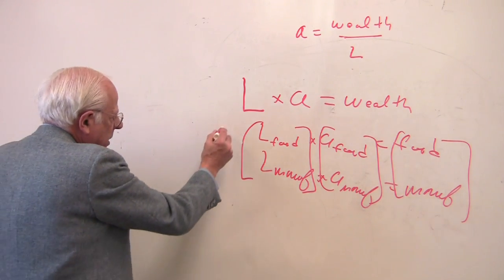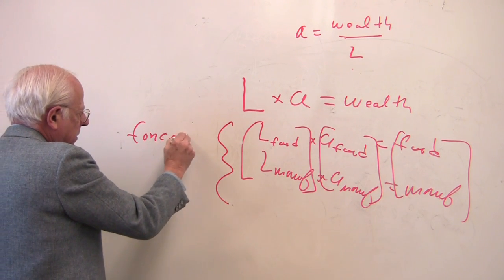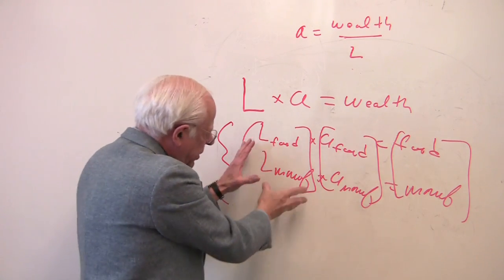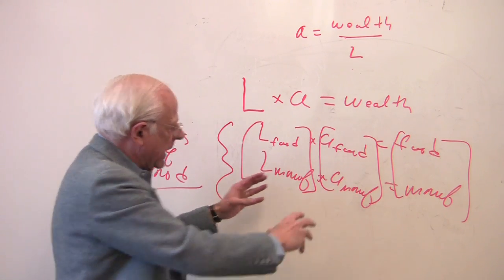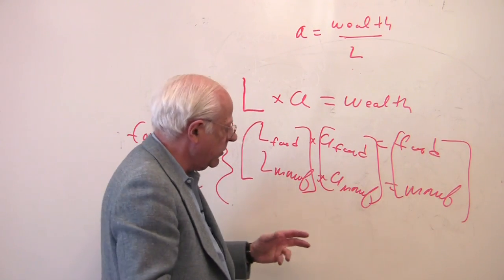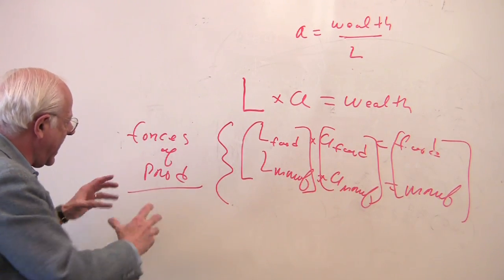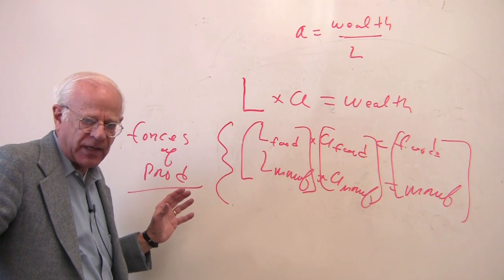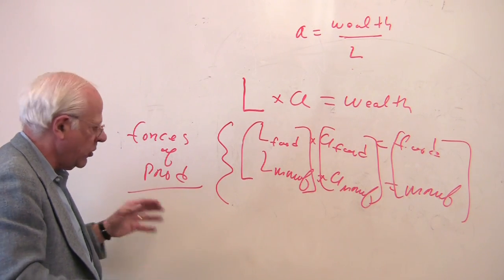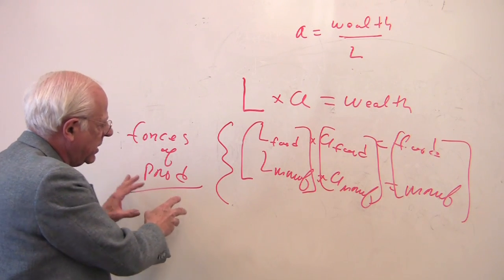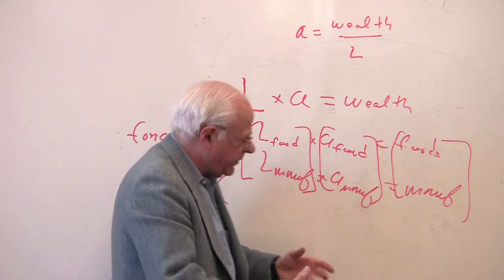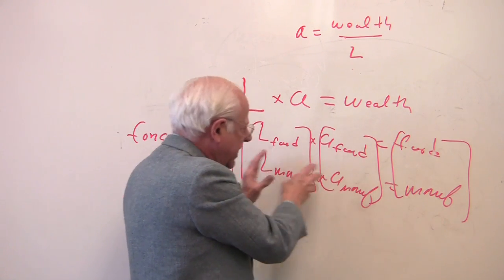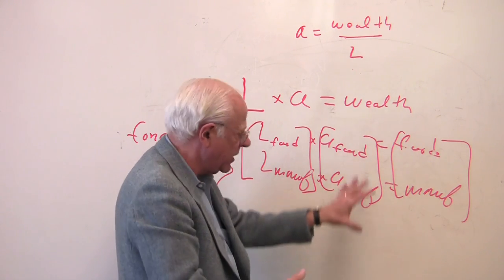In the Marxian tradition, this is called the forces of production — or briefly, the technology. It has two components: the division of labor, after Adam Smith, and the productivity of that division, after Smith and Ricardo, which gives us the wealth in society. Capitalism is a society which develops the forces of production above and beyond any other kinds of society — beyond feudalism, slavery, and ancient societies. We get more and more wealth the more complex is the division of labor in society — that's Adam Smith's idea — and the higher the productivity associated with that division of labor by the introduction of new machinery — that's Ricardo's idea.